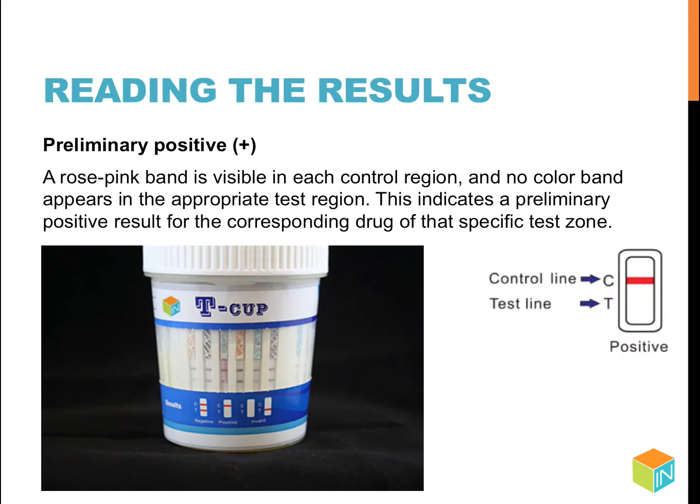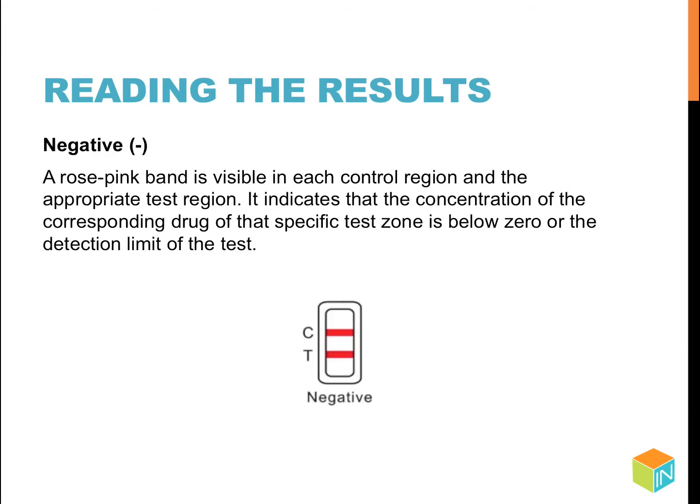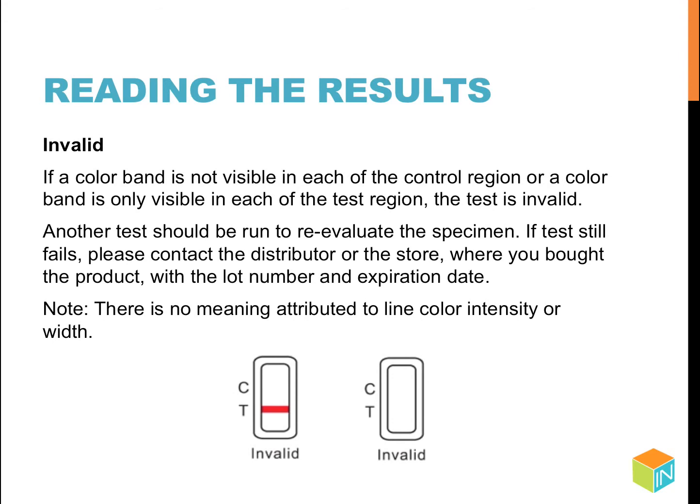Reading the results: A preliminary positive result shows a rose pink band visible in each control region with no color band in the appropriate test region, indicating a positive result for the corresponding drug in that test zone. A negative result shows a rose pink band in both the control region and the appropriate test region, indicating the drug concentration is below the detection limit. An invalid result occurs when no color band is visible in the control region, or a color band appears only in the test region.